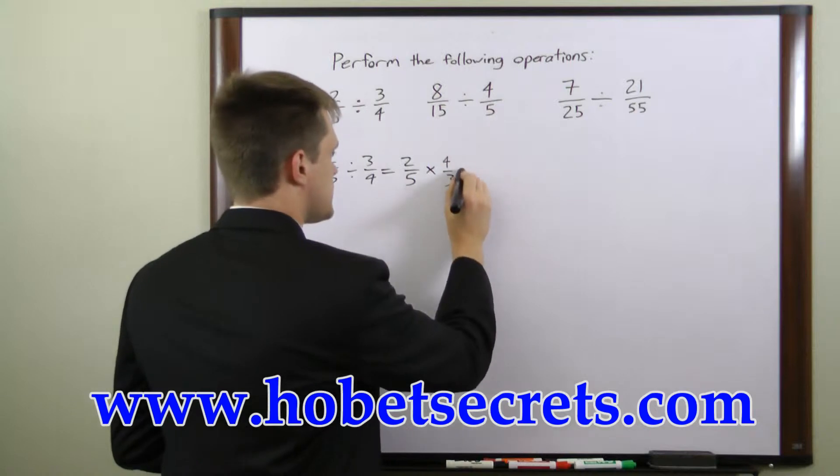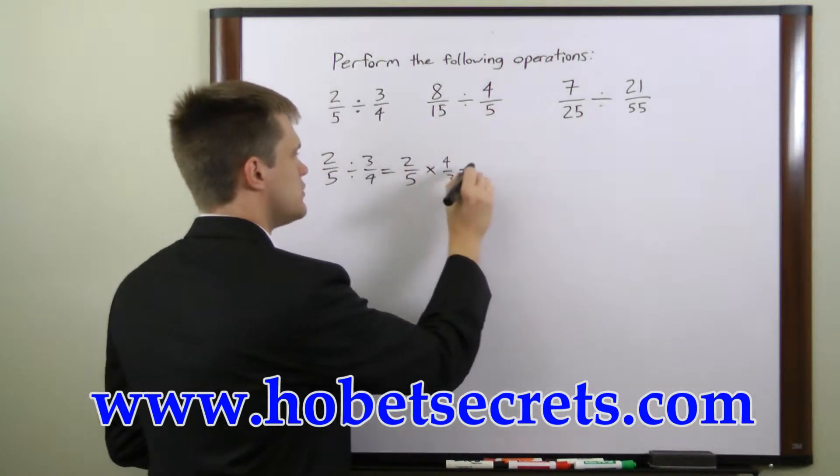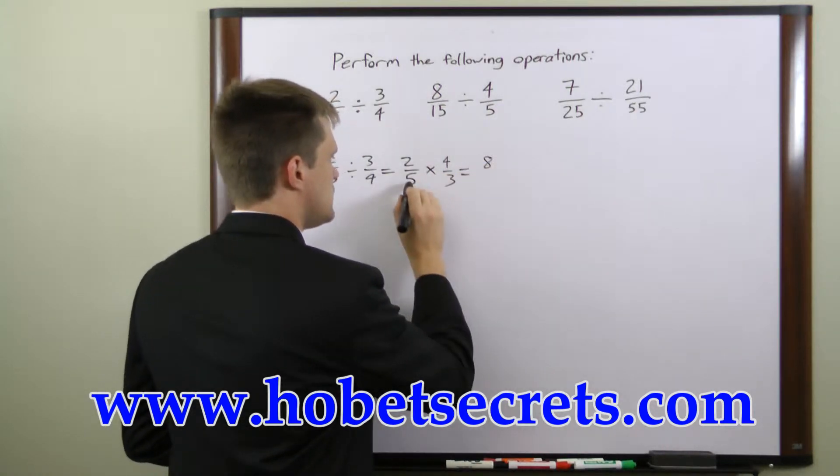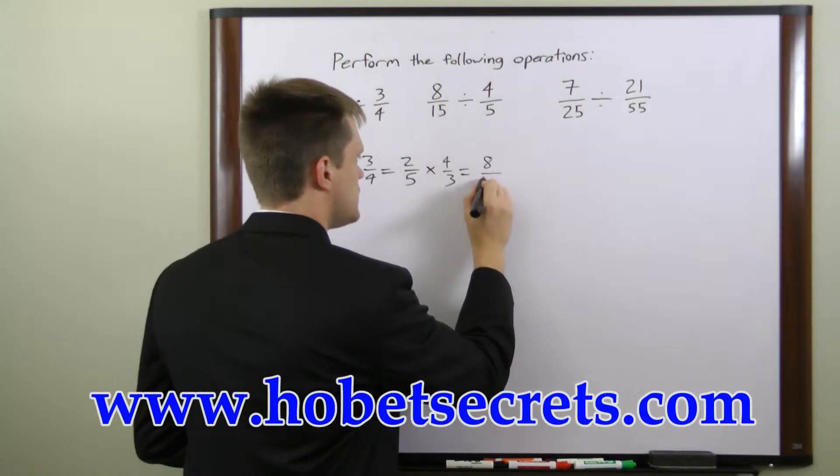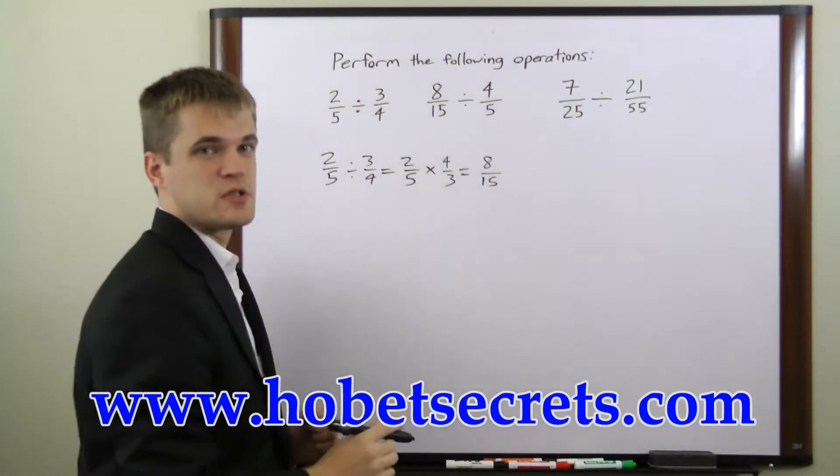Now we can just complete this like a multiplication problem. Two times four is eight divided by five times three which is fifteen. So that's our solution.